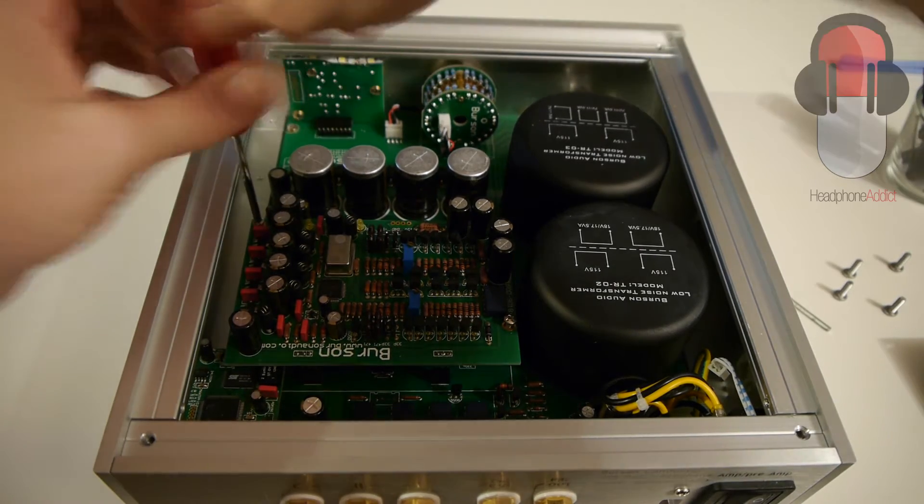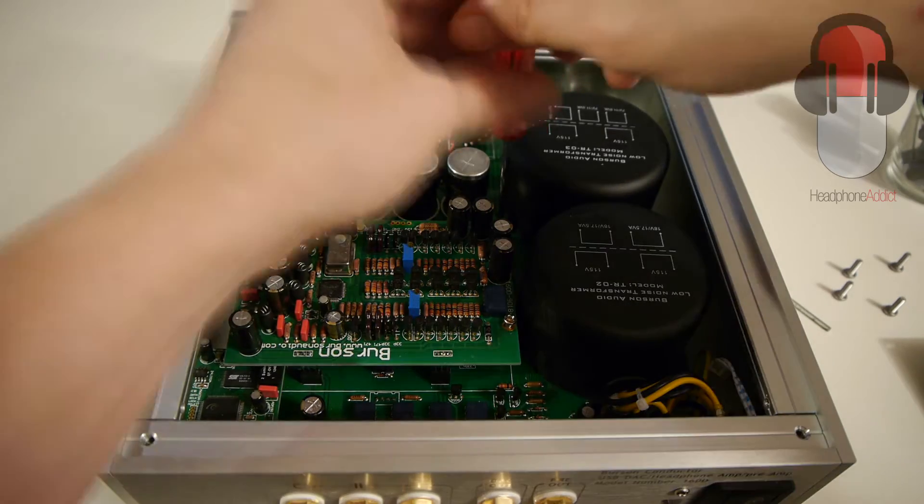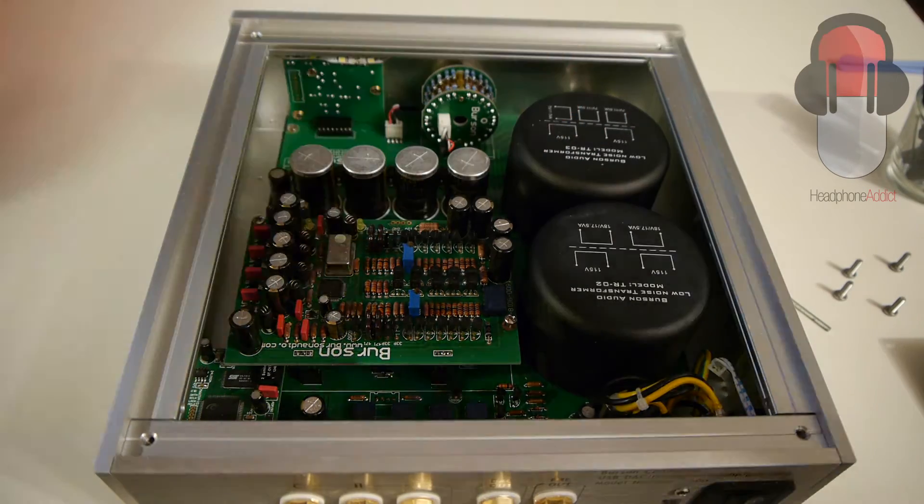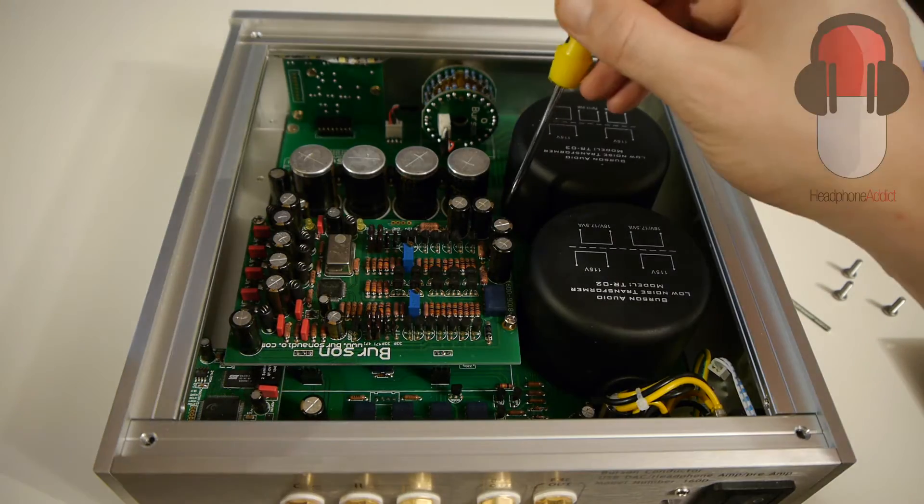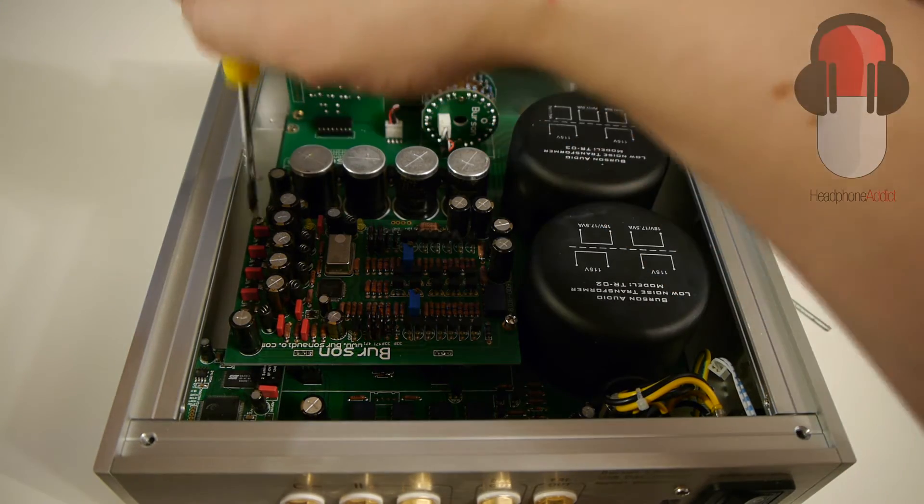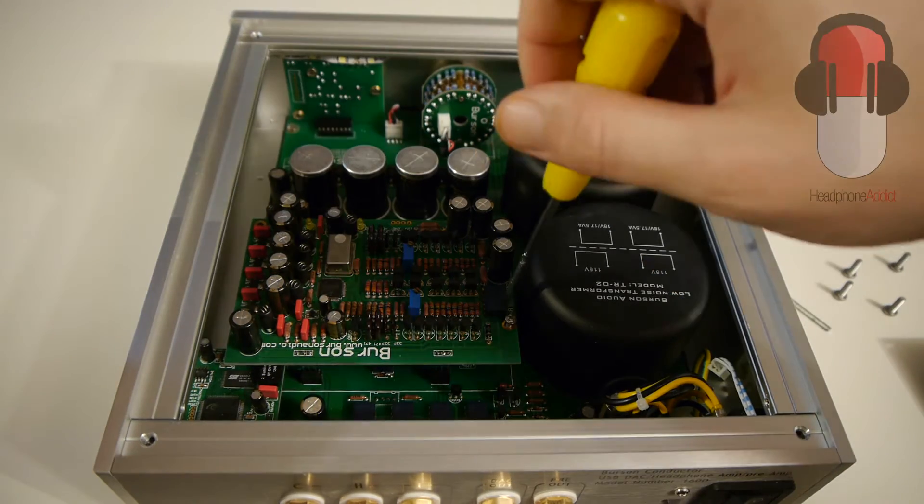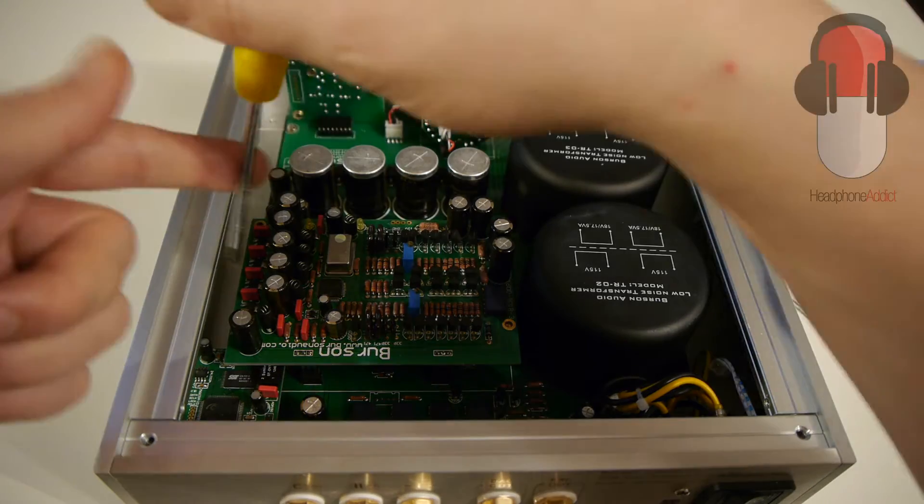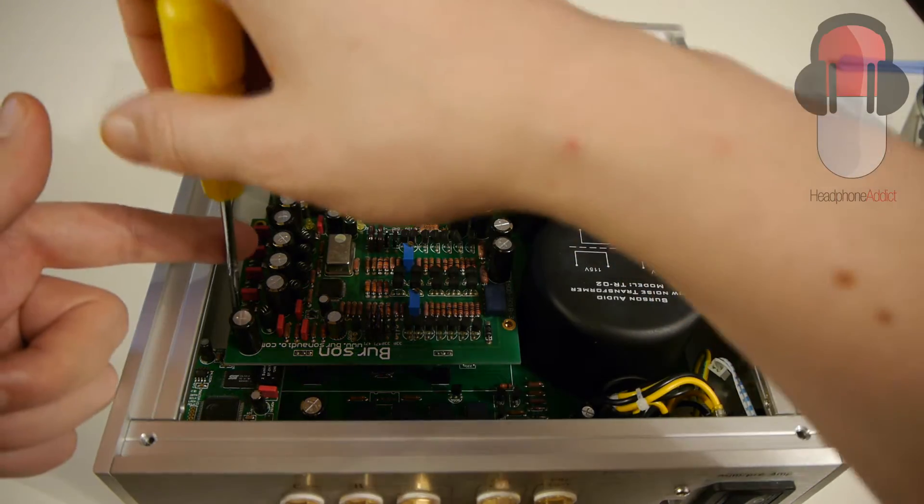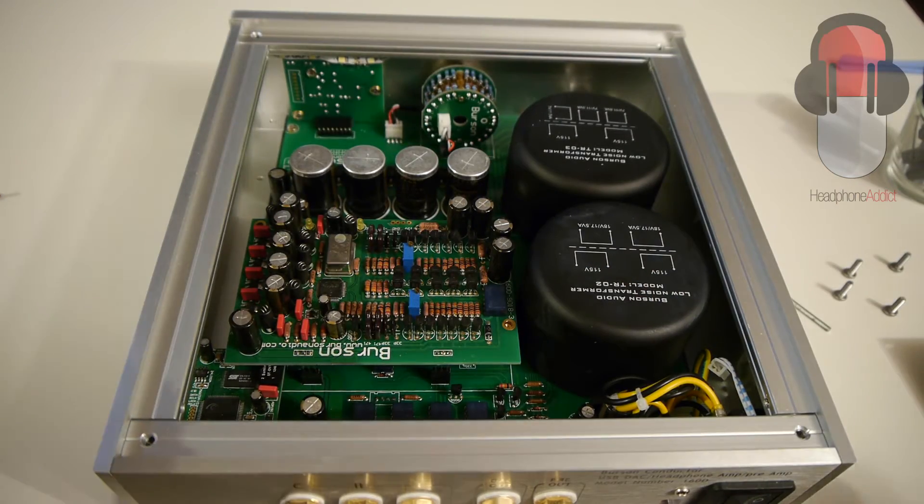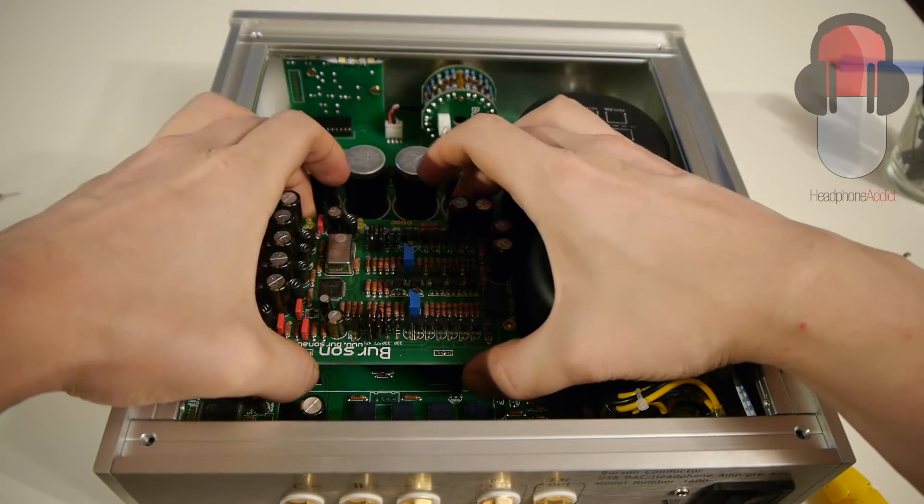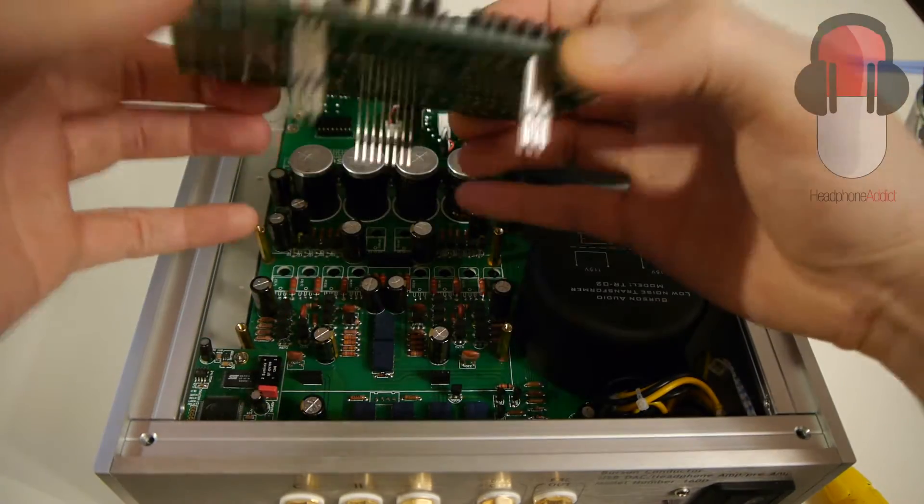There are four screws that hold the DAC chip in place. As soon as they're off, you pretty much just pull the card out. It's as easy as that. And there I go.